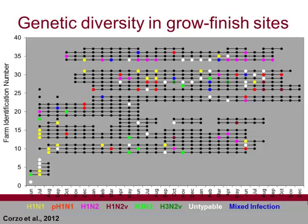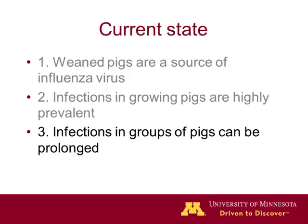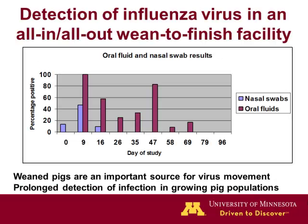We see this potpourri of viruses particularly in the grow-finish populations, and that's where we see the cost of infections in terms of mortality, delayed growth, and feed conversion. The other thing is that infections in these groups can be prolonged. We used to believe influenza would come into a farm, everybody would get infected at the same time, we would hear a cough, and then a week later the infection would be gone. What we've shown is that it's not the case — the viruses like to stay there longer than we thought.